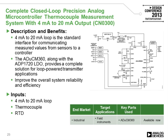Here's a circuit using that device as a complete smart transmitter. This is using the ADUCM360 to measure a thermocouple as well as an RTD for cold junction compensation. The ADUCM360 is also used to drive an external transistor which regulates the 4 to 20 milliamp current loop. There's one other component — the ADP1720 LDO — to regulate the loop voltage down to the supply of the ADUCM360. This circuit can be found at analog.com if you search for CN0300. The hardware is available, there is a circuit note available, and there's also a number of other collateral materials.